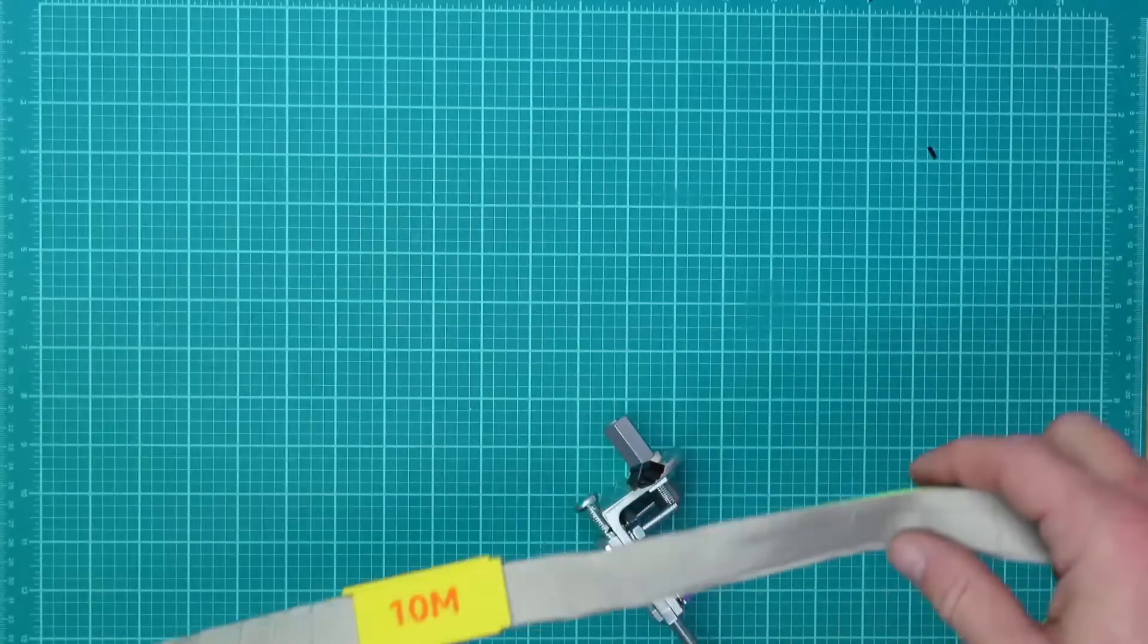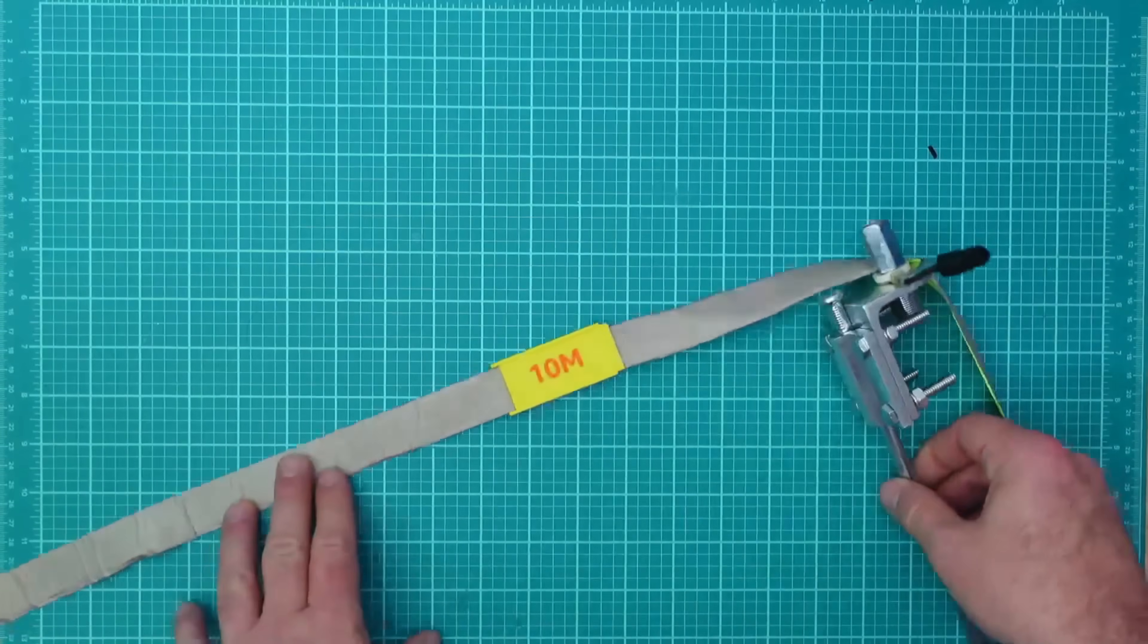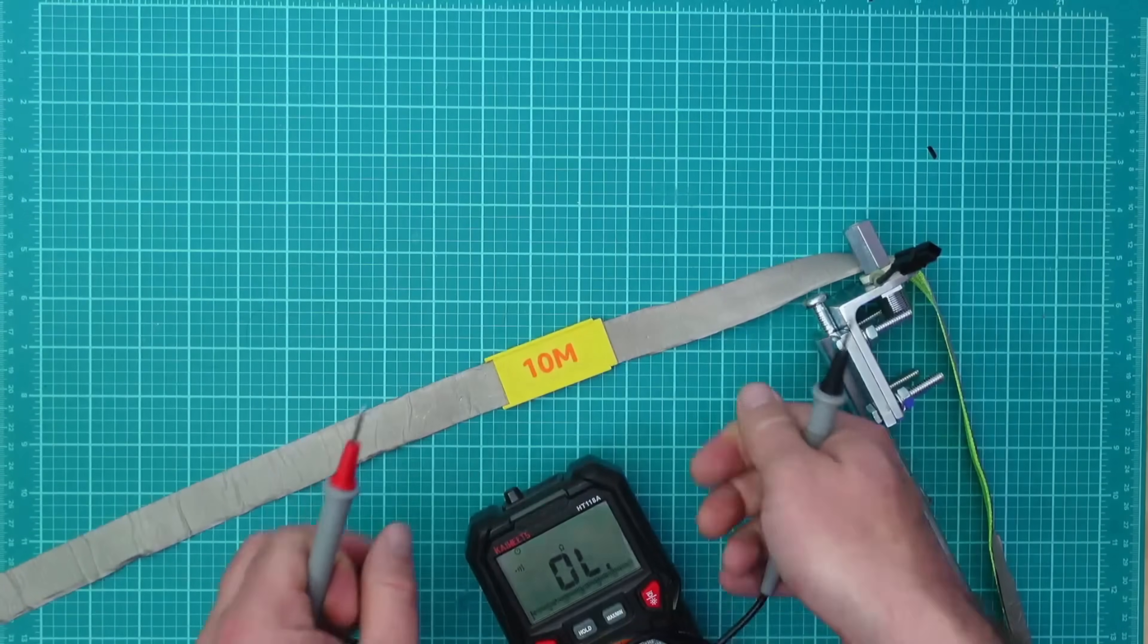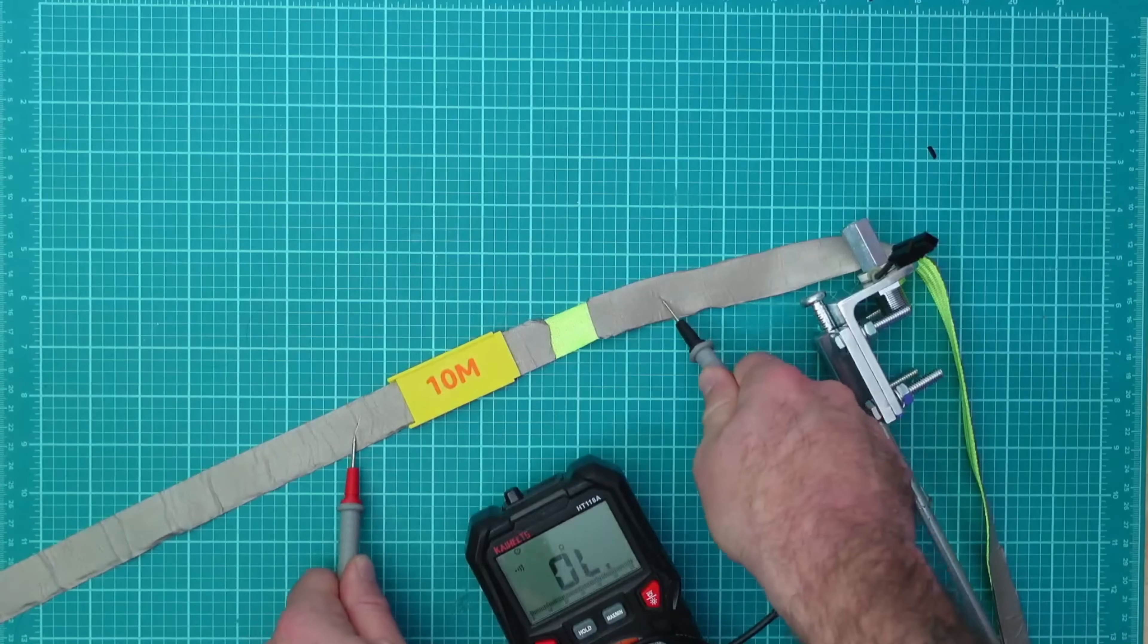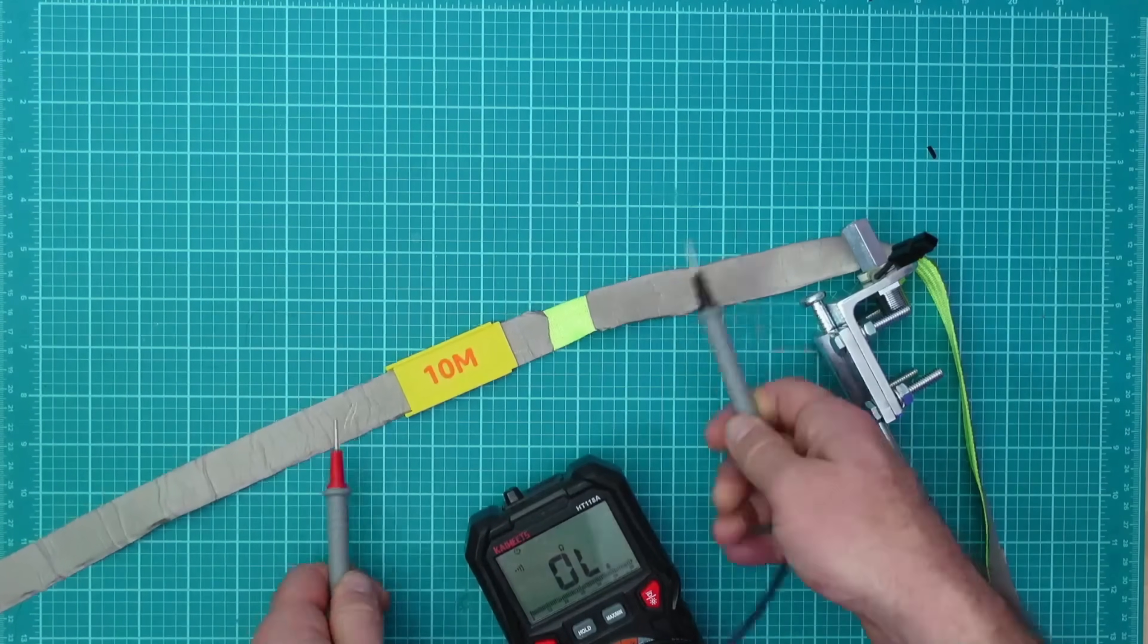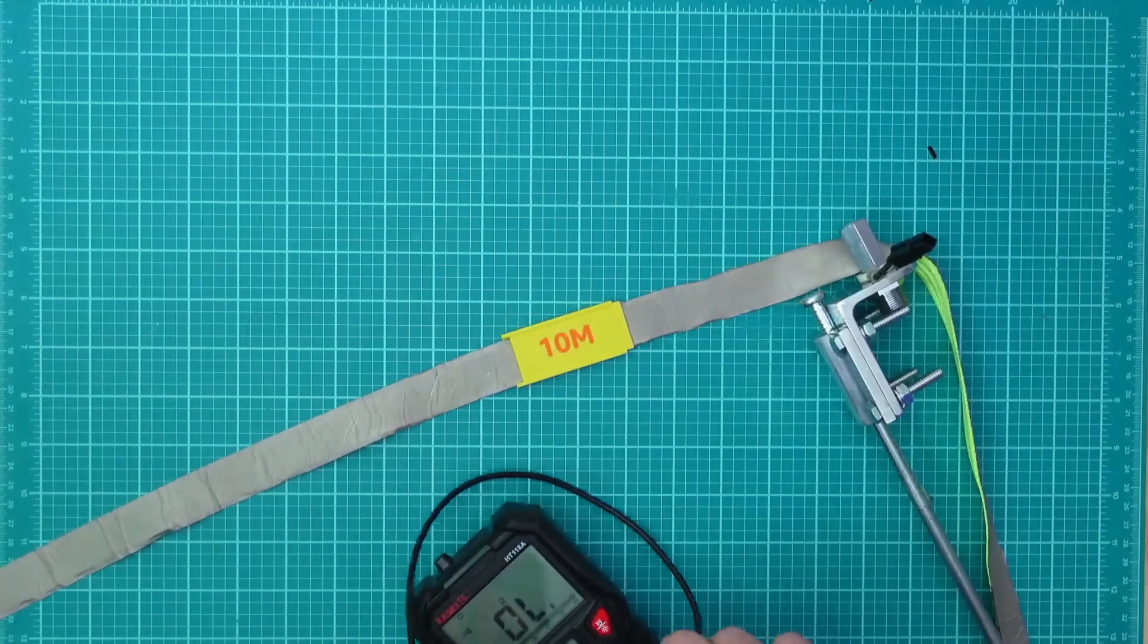So for example, if I were to check for continuity, now we have continuity, now we don't. 10 meter antenna, random wire. You know, that's great.